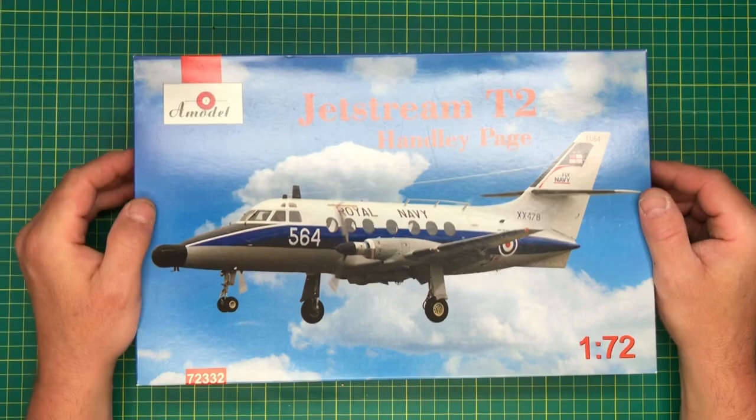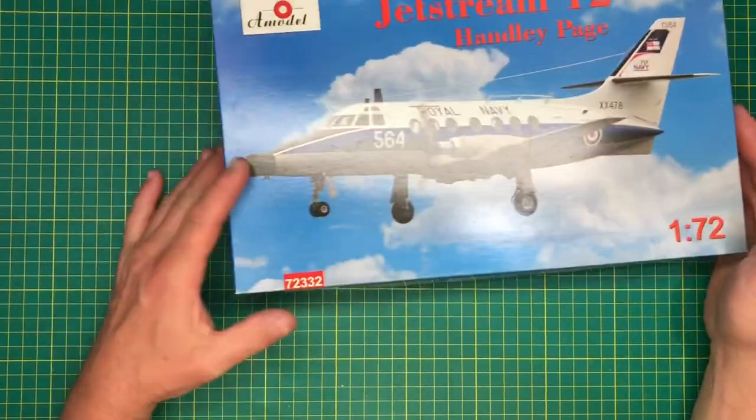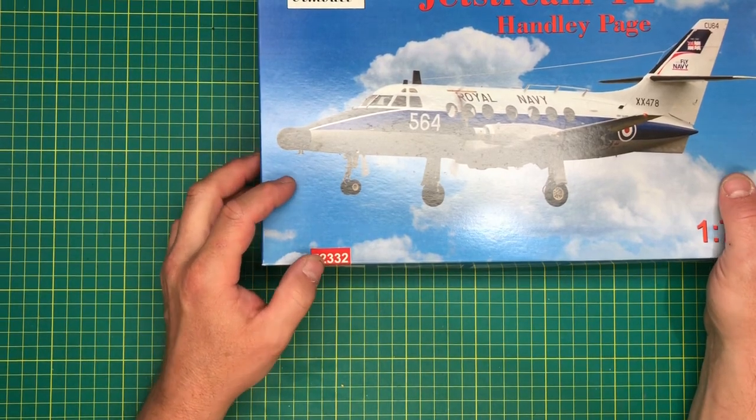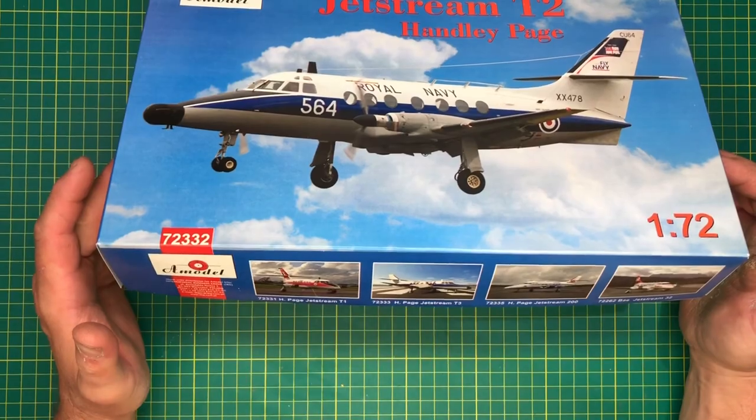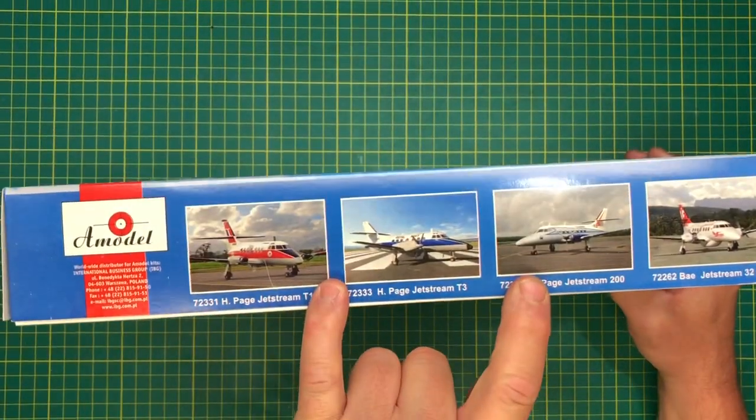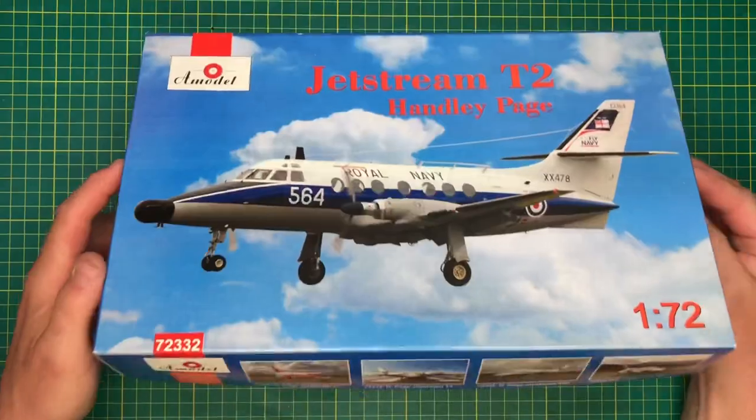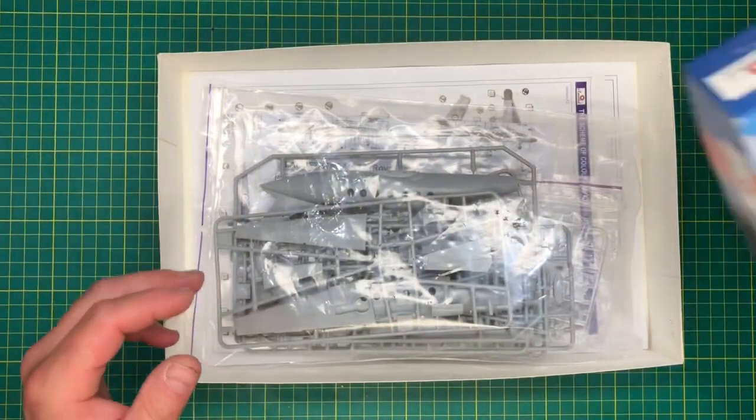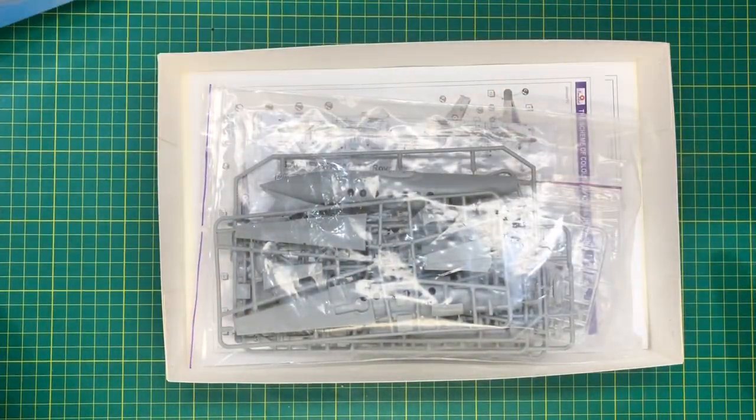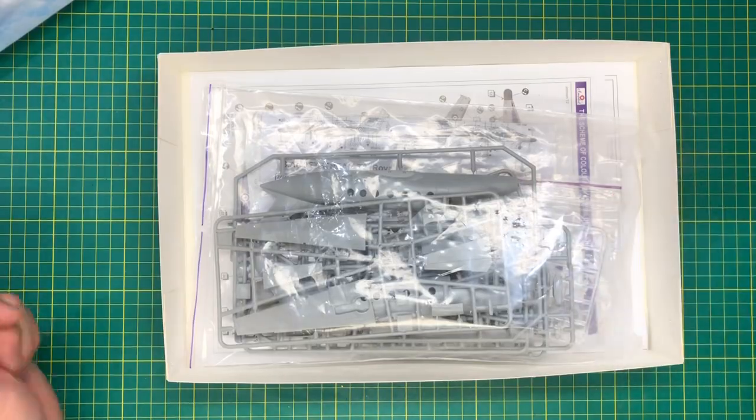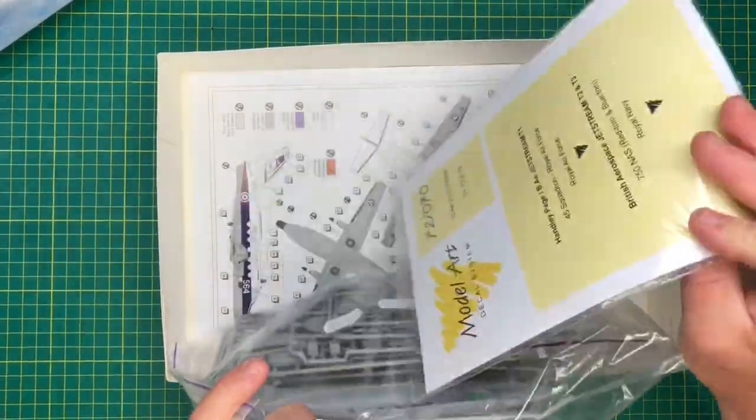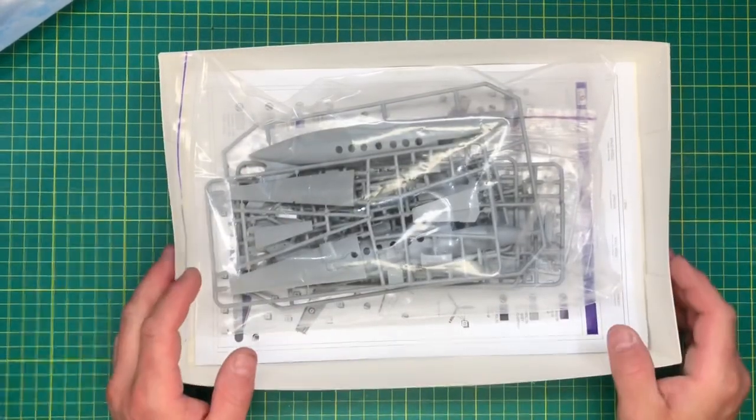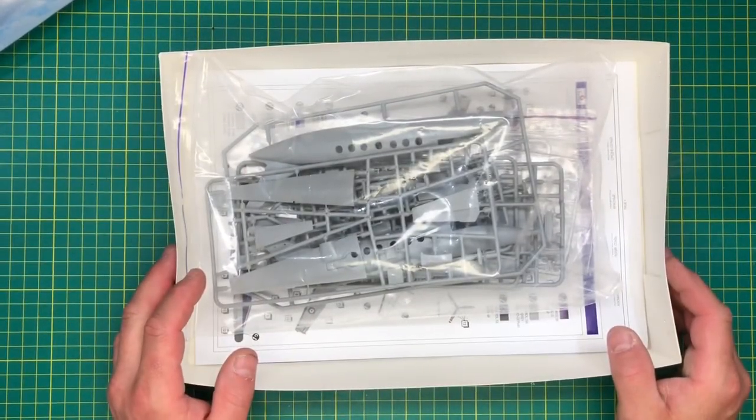Here we are gentlemen, the A-model Jetstream T2. The kit number on this one is 72332. These are the other variants they do in it, a Polish company. Usual thing, we're all bagged up, haven't been opened. We've got spare decals that's not part of it, so I'll put them to one side. We'll come back and de-bag and take it from there. Okay chaps, see you in a bit.